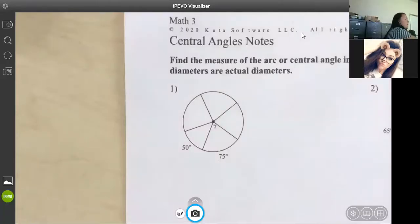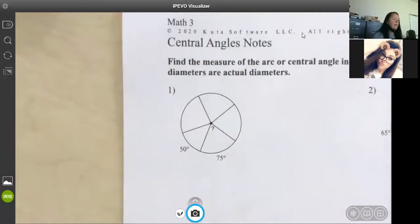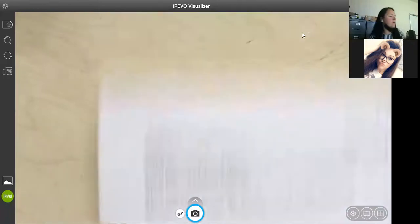All right. We're going to talk about central angles to a circle. They are super easy. I'm going to flip over here.